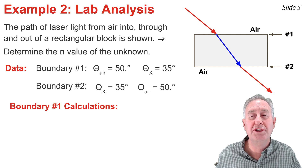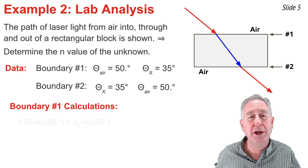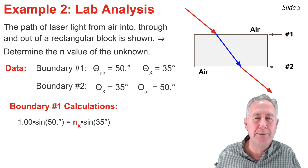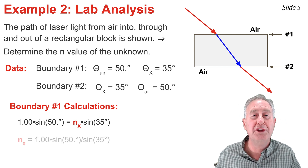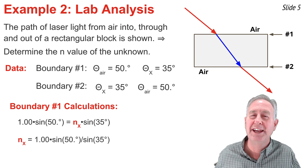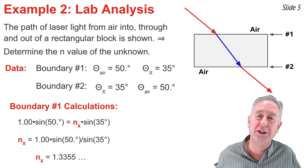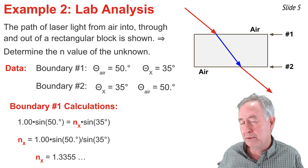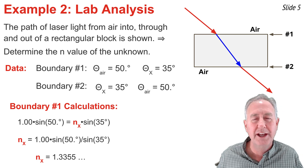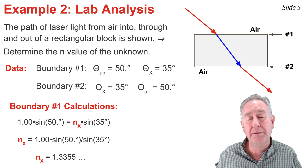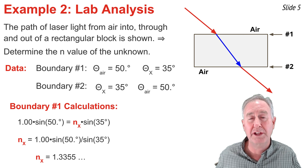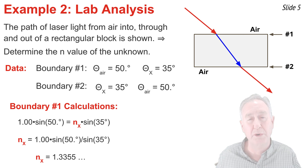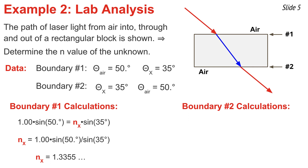I will use my measured values to determine the index of refraction of material X, performing calculations for both the top and bottom boundary. When I substitute my known values into the Snell's Law equation, it becomes 1.00 times the sine of 50 degrees equals n_x times the sine of 35 degrees. I divide both sides by the sine of 35 degrees and use my calculator to find the index of refraction of material X — it comes out to be about 1.3355. Even though I got the same values for the second boundary, I'm going to perform my calculations a second time.